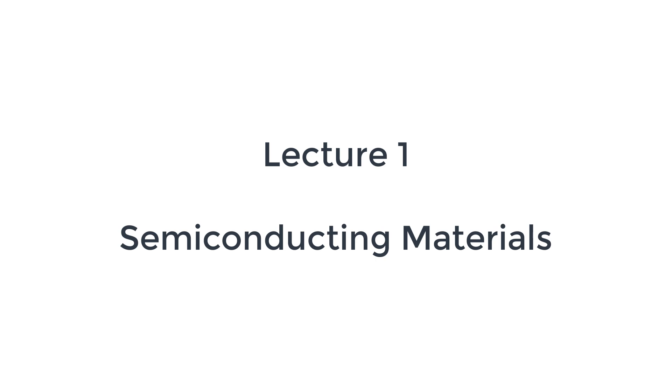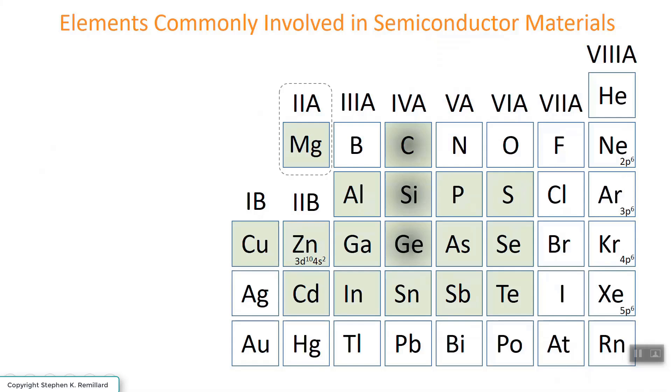Let's start with looking at semiconducting materials, and that begins with a look at the periodic table. So this is the top right corner of the periodic table, roughly, going from groups 1B to 8A.